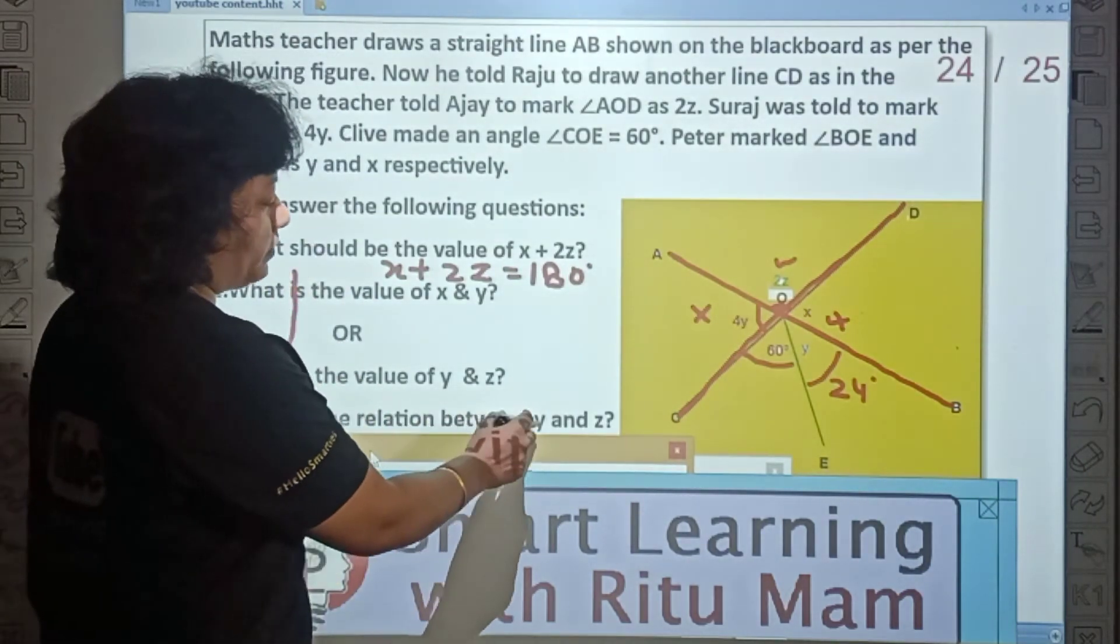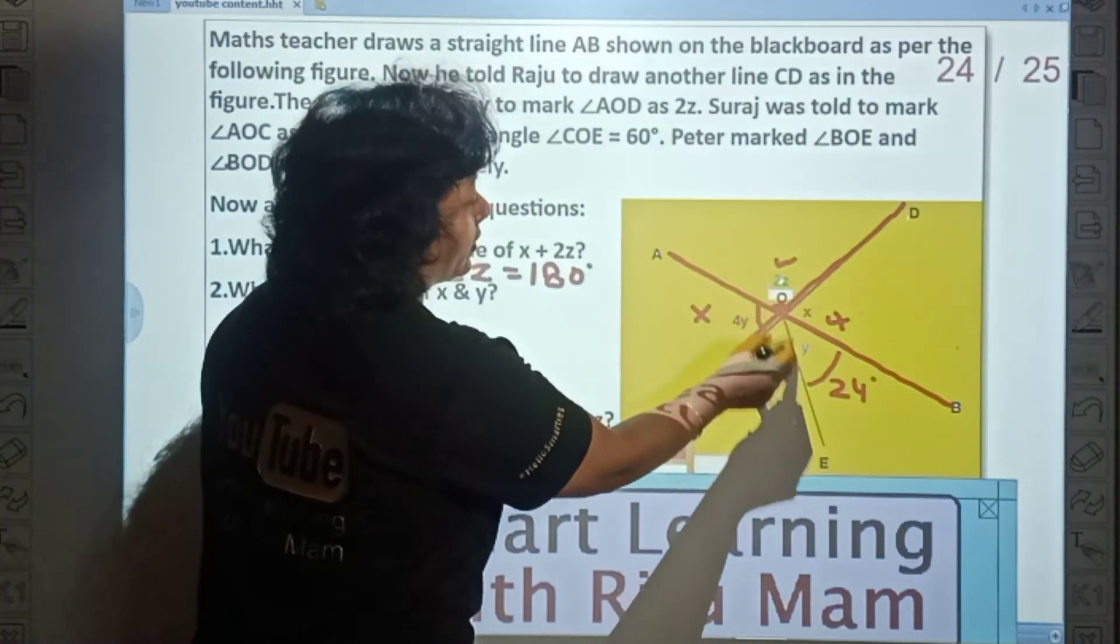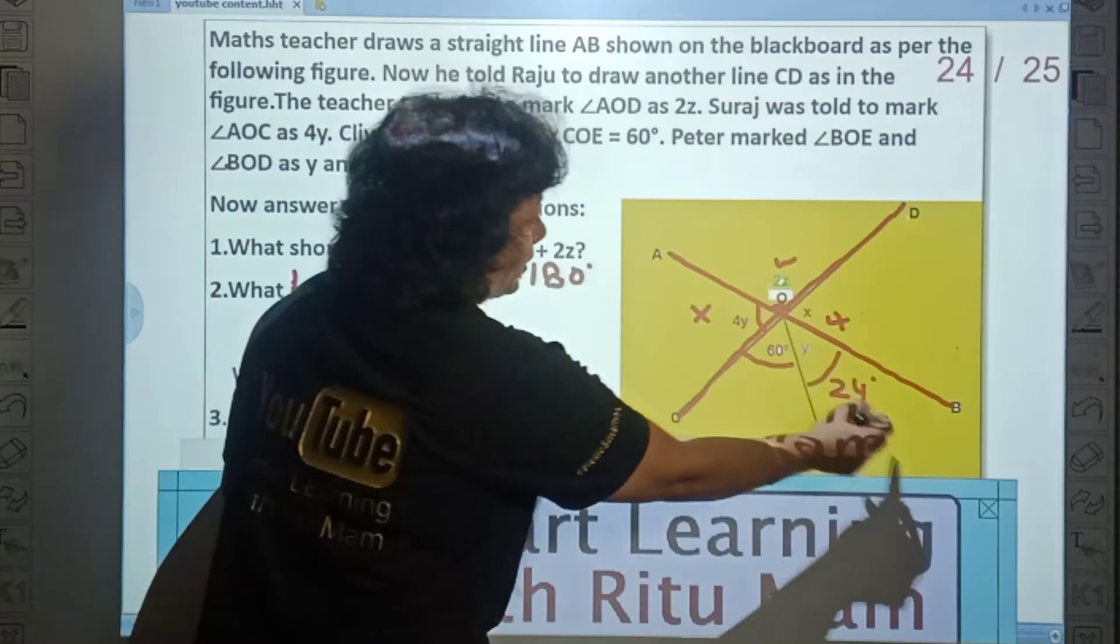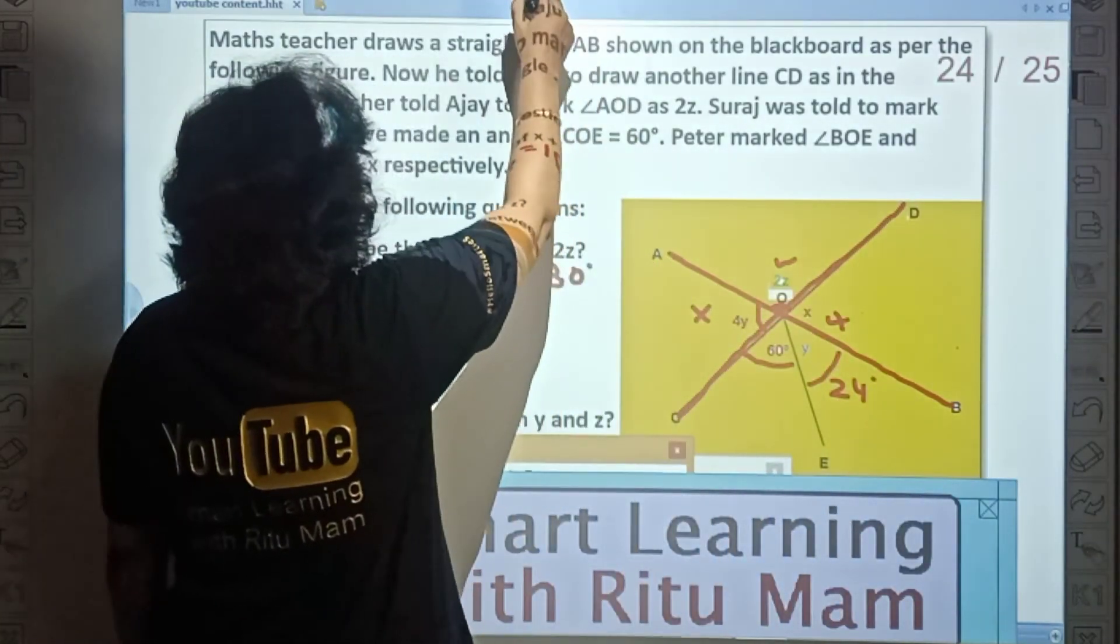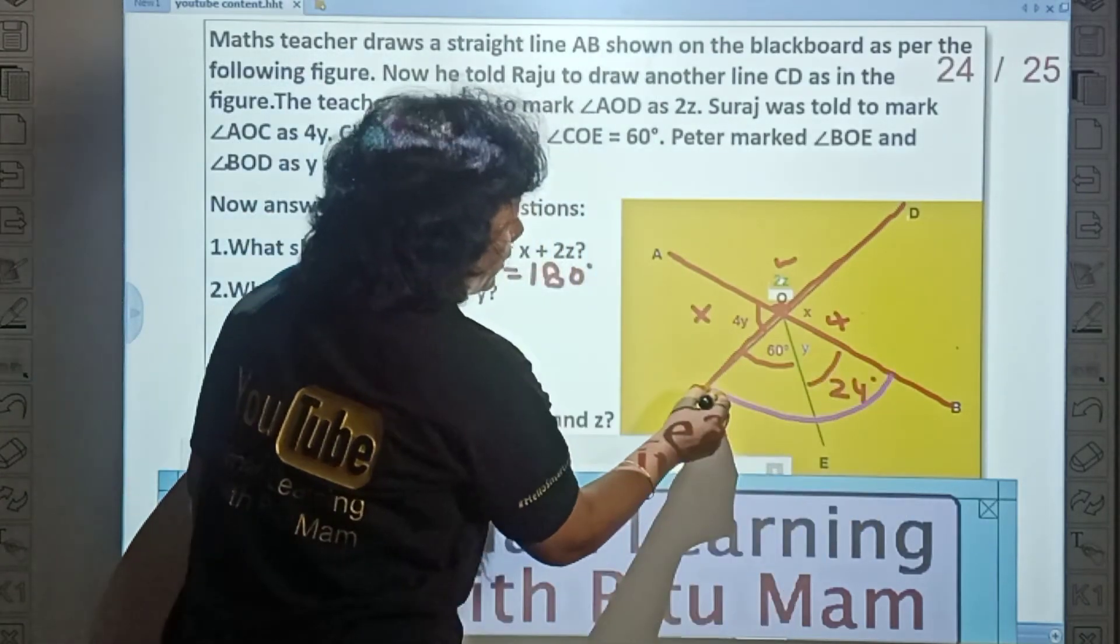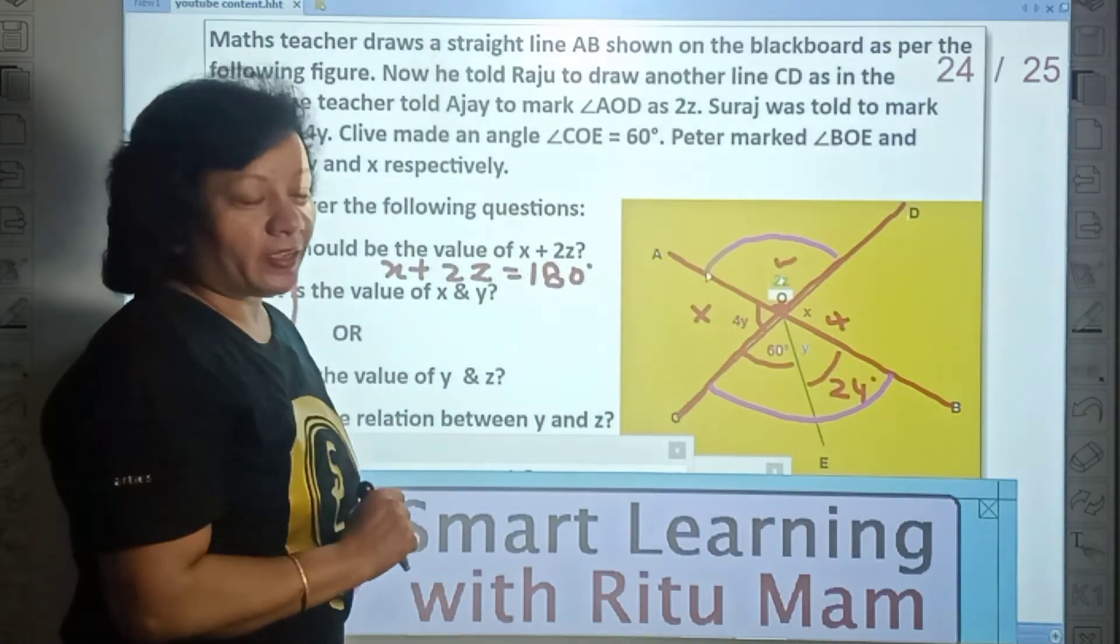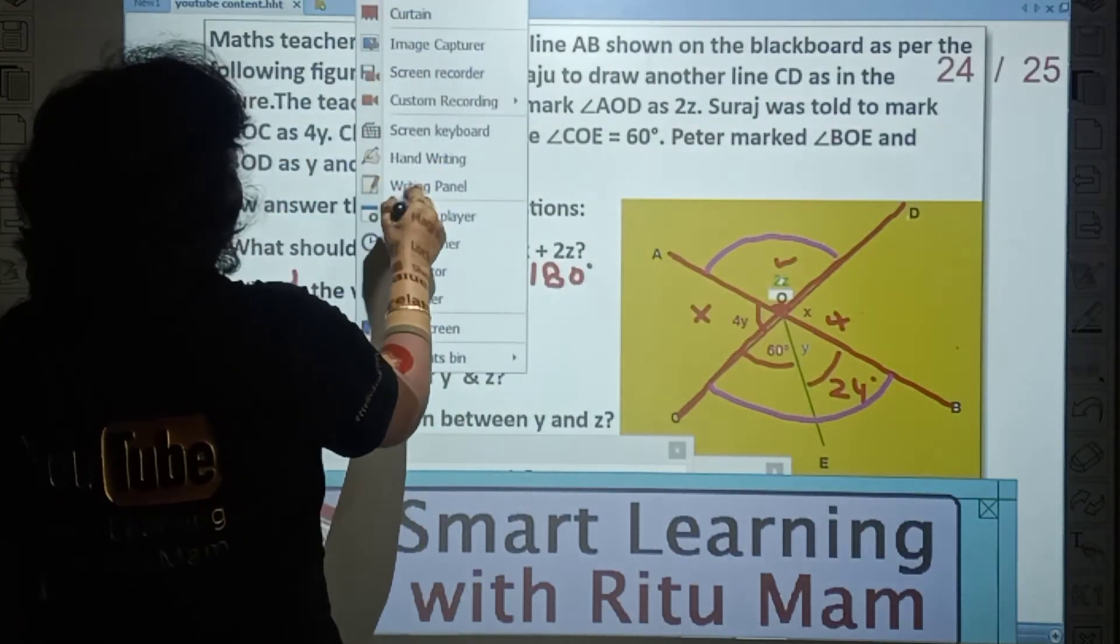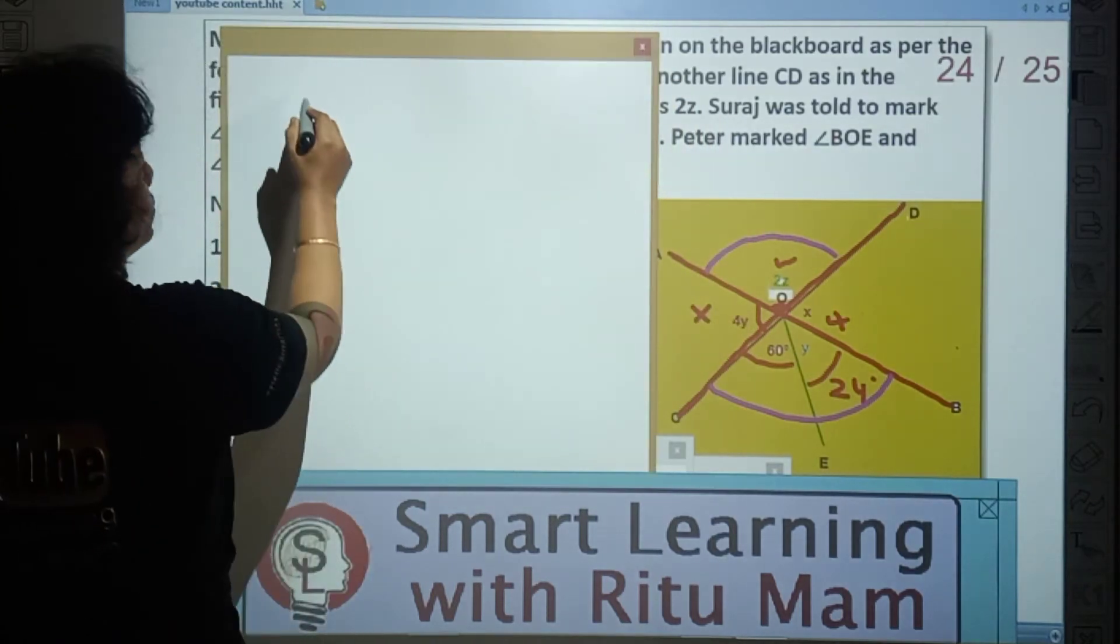The last part is, we have to find the relation between Y and Z. Look carefully. What could be the relation between Y and Z? We saw that AB and CD are straight lines. So if you look, these two angles, these are vertically opposite angles. They are vertically opposite angles, then they are equal.